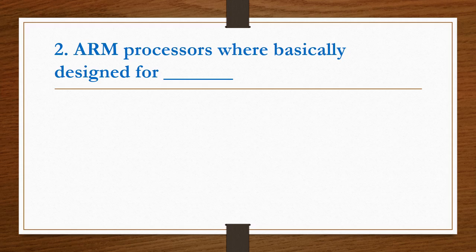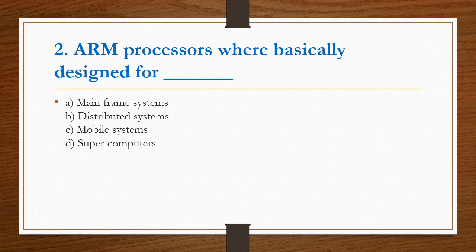Second question: ARM processors were basically designed for Mainframe Systems, Distributed Systems, Mobile Systems, or Supercomputers. Always remember, ARM processors are mainly designed for Mobile Systems. Option C is the right answer.